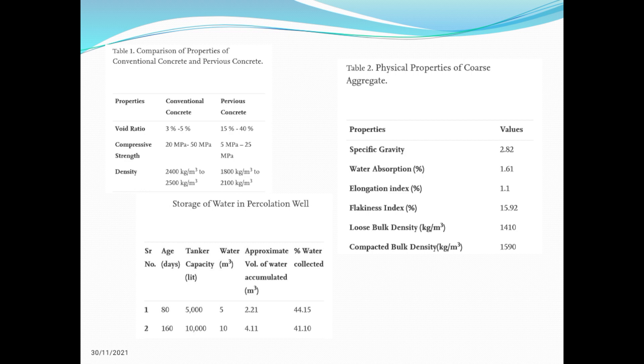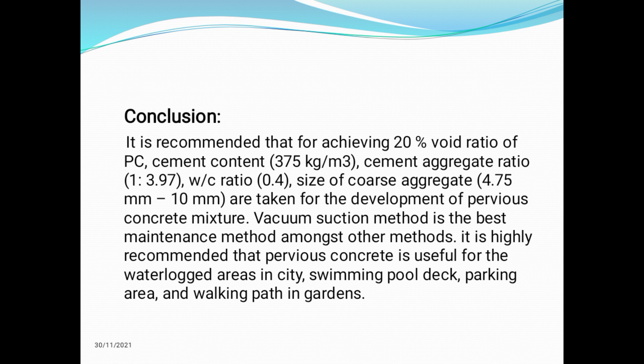The first table gives results comparing properties of conventional concrete and pervious concrete. The void ratio in conventional concrete was 3% to 5%, and in pervious concrete 15% to 40%. Compressive strength in conventional concrete was 20 to 50 MPa, but in pervious concrete it was 5 to 25 MPa. Moving on to conclusions: to achieve 20% void ratio of permeable concrete, the recommended mix is cement content 375 kg/m³, cement to aggregate ratio 1:3.97, water cement ratio 0.4, and coarse aggregate size 4.75 mm to 10 mm.